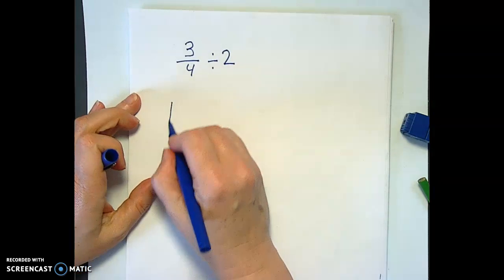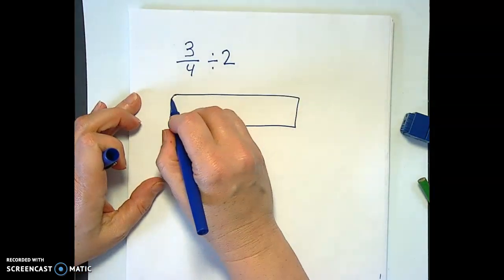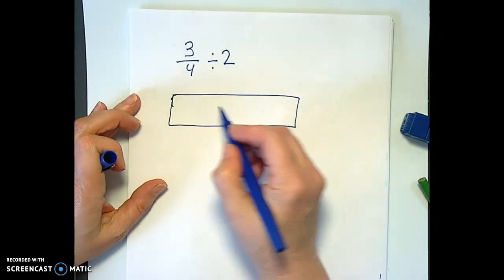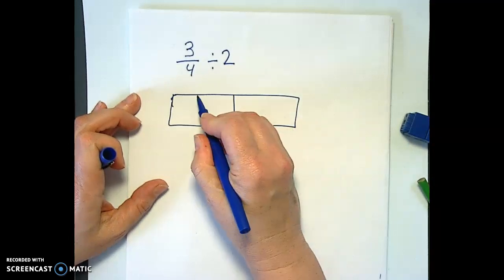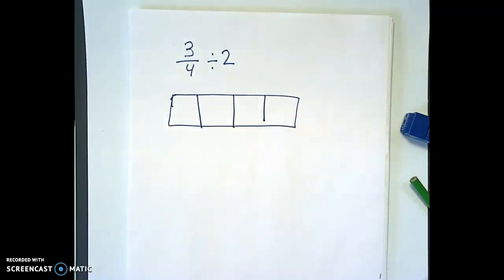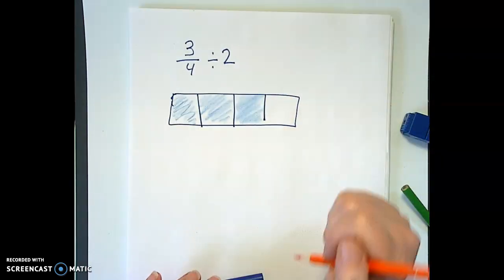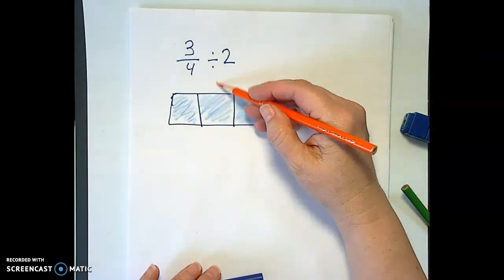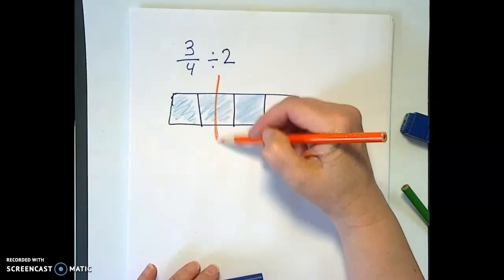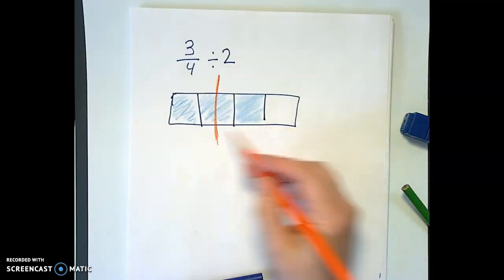We've got 3 quarters and we want to divide it by 2. Let's make quarters first and shade them in quickly. 3 quarters to divide that by 2. I'm just going to draw this guy right here, which we can tell pretty clearly. That's half and half.